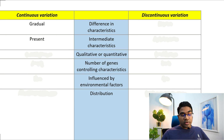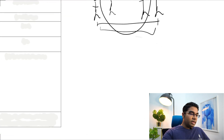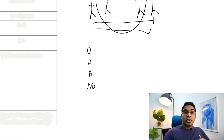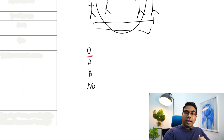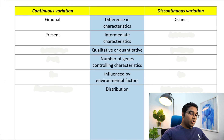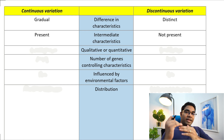Whereas in discontinuous variation, the change is distinct. For example, if we look at blood groups, we have either blood group O, A, B, or AB. We don't have any characteristic in between. There is nothing between O and A, or A and B, or B and AB. Therefore, we say that the changes in the characteristics are very distinct. There are no intermediate characteristics — nothing in between these characteristics.